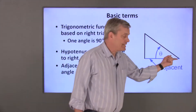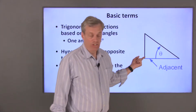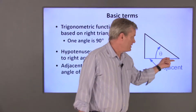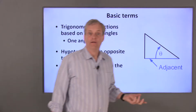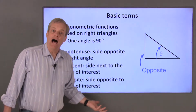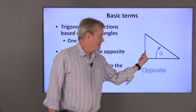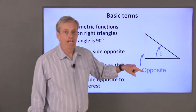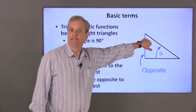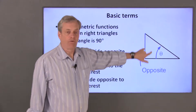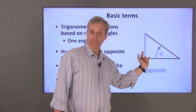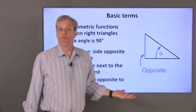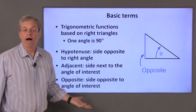For example, this side is adjacent to this angle theta. The adjacent side touches the angle. The side opposite to the angle theta does not touch theta. If we change the angle that we're interested in to this angle up here, the roles of the opposite and adjacent side switch. The hypotenuse is always just the hypotenuse.